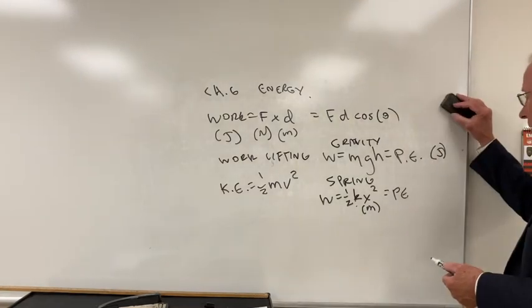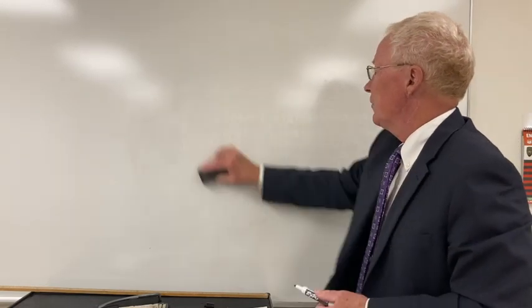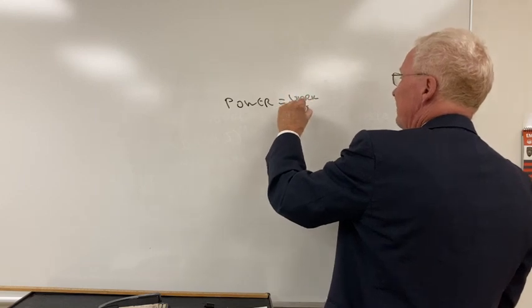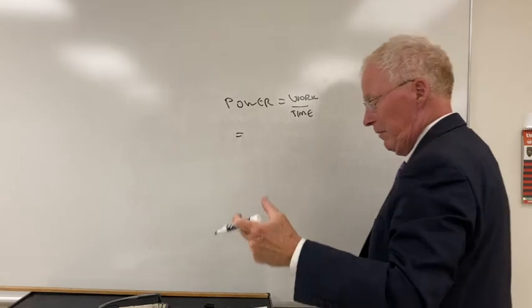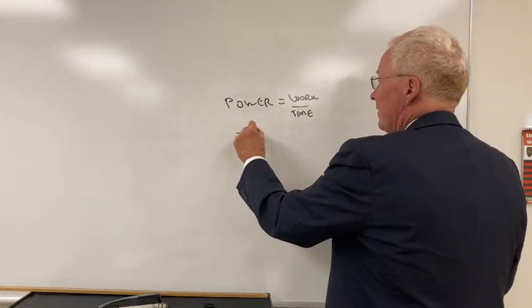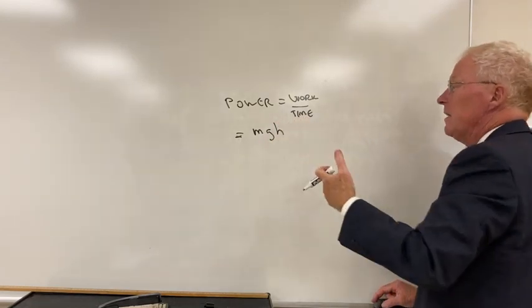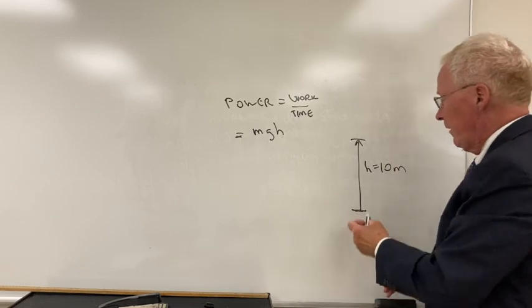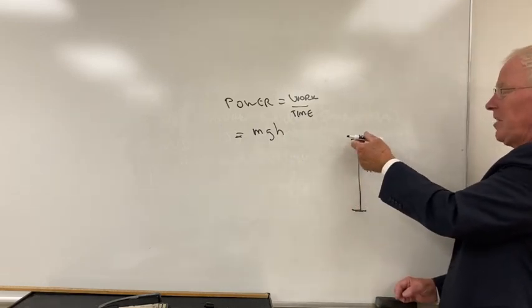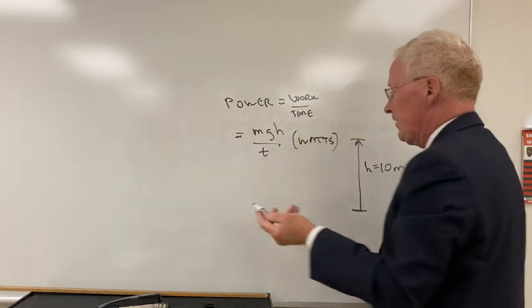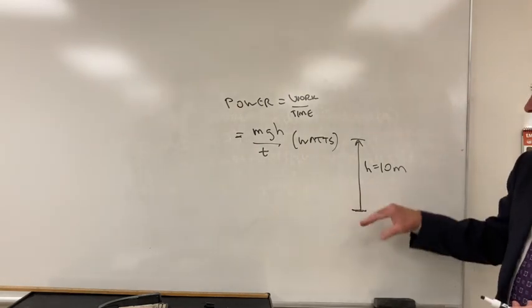Last thing here on this is power. Chapter six power is work over time. So if we go up a hill, climb a hill. If you climb a hill, work is MGH. So mass times g times how high. So if you go up a certain amount of stairs, say 10 meters, the work is the same. But if I walk up slowly, then it's taking longer. The power over time is in units of watts.